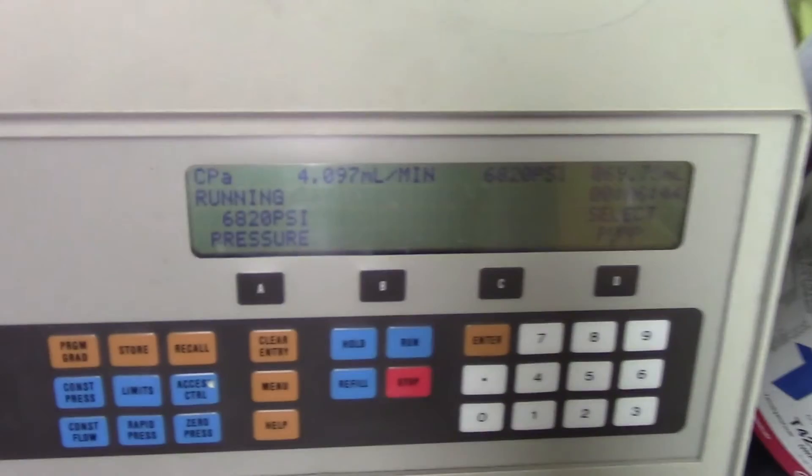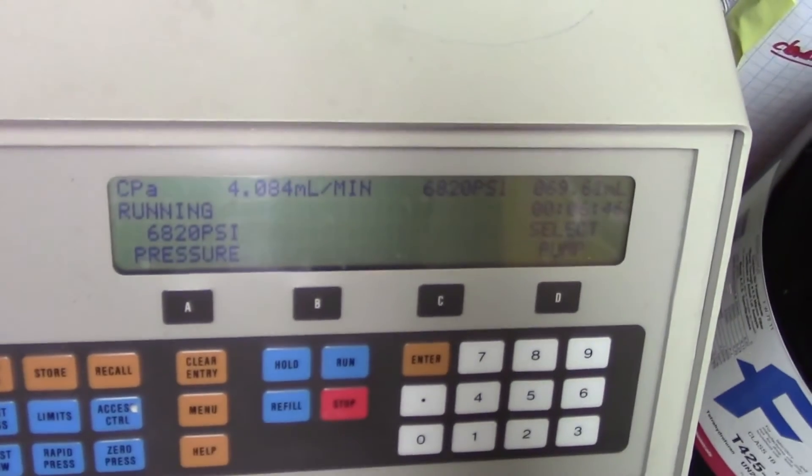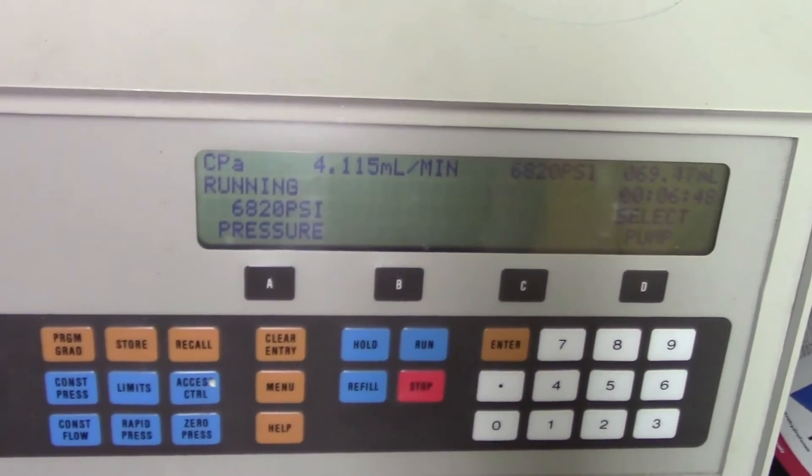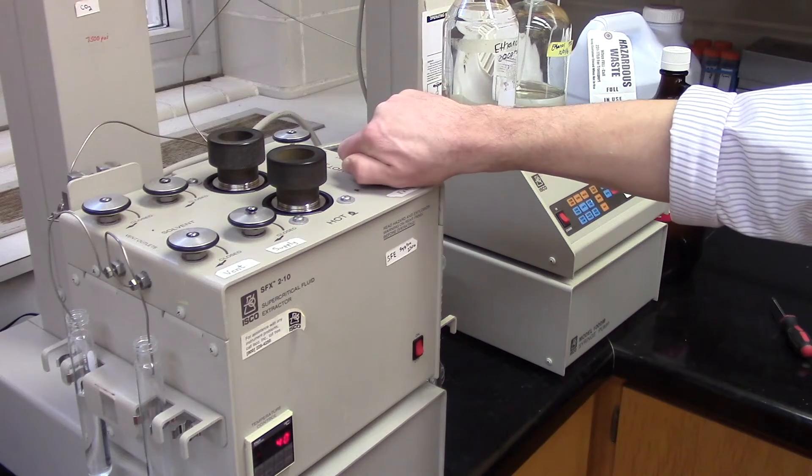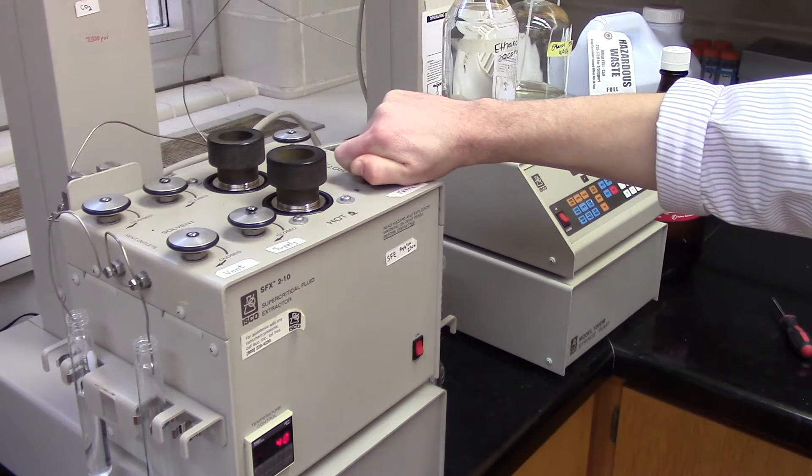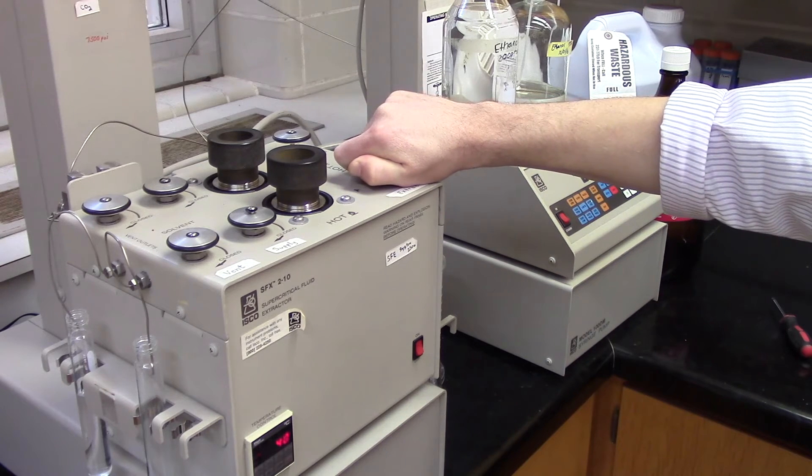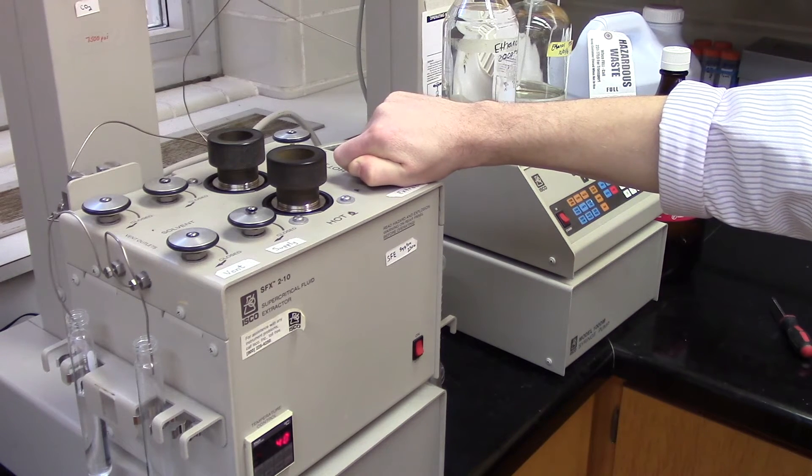You can see the flow rate, pressure, remaining CO2 volume, and extraction time on the control panel. To adjust the flow rate, simply tighten or loosen the outlet valve. Maintaining a low flow rate will prevent excessive ice formation.